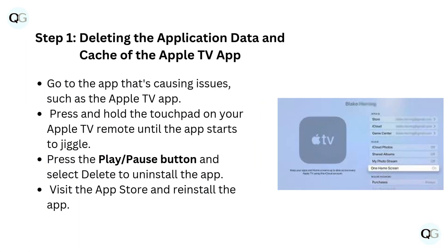Step 1: Deleting the application data and cache of the Apple TV app. Go to the app that's causing issues, such as the Apple TV app. Press and hold the touchpad on your Apple TV remote until the app starts to jiggle. Press the play/pause button and select Delete to uninstall the app. Then visit the App Store and reinstall the app.